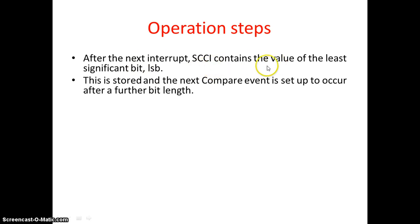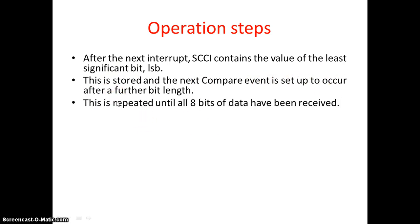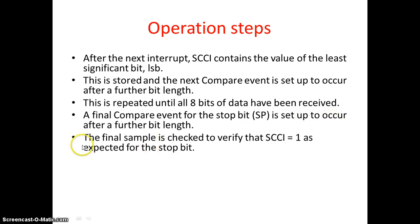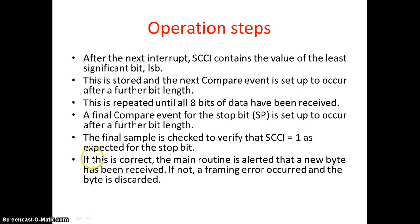After the next interrupt, SECI contains the value of the least significant bit. This is stored and the next compare event is set to occur after a further bit length. This process is repeated until all eight bits of data have been received. A final compare event for the stop bit is set to occur after one more bit length, and the final sample is checked to verify that SECI equals one, as expected for a stop bit.